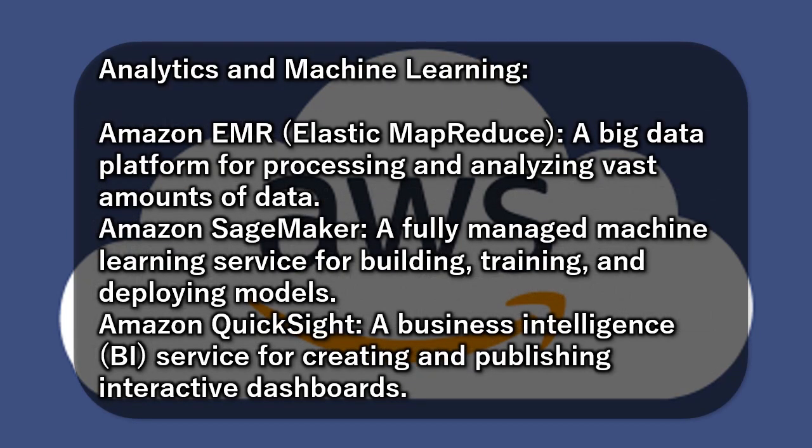Analytics and Machine Learning: Amazon EMR (Elastic MapReduce) is a big data platform for processing and analyzing vast amounts of data. Amazon SageMaker is a fully managed machine learning service for building, training, and deploying models. Amazon QuickSight is a business intelligence (BI) service for creating and publishing interactive dashboards.